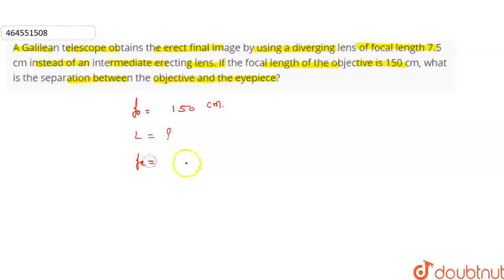Okay, and here we will see Fe, which is 7.5 cm. So if we are talking about normal adjustment, then here we will see the separation between objective lens and eyepiece lens.